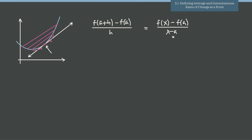These are both formulas for the difference quotient — they mean the same thing. In the right-hand formula, one point is x and the other is a. In the left-hand formula, h represents the distance between a and x. So they really calculate the same thing; it's just two different ways of expressing the difference quotient.